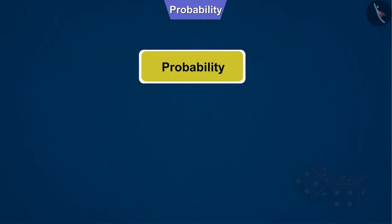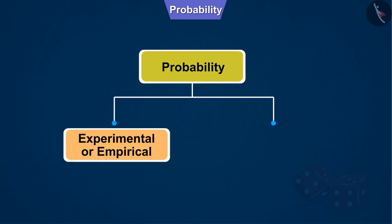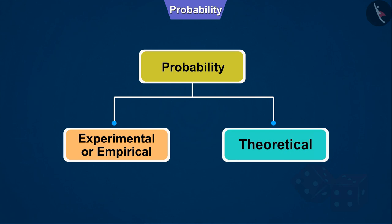Basically, there are two types of probability: experimental or empirical, and theoretical, based on which there can be two different answers for the same event.